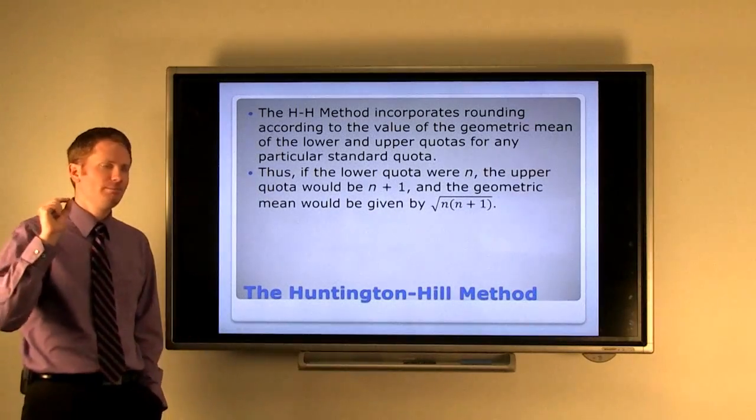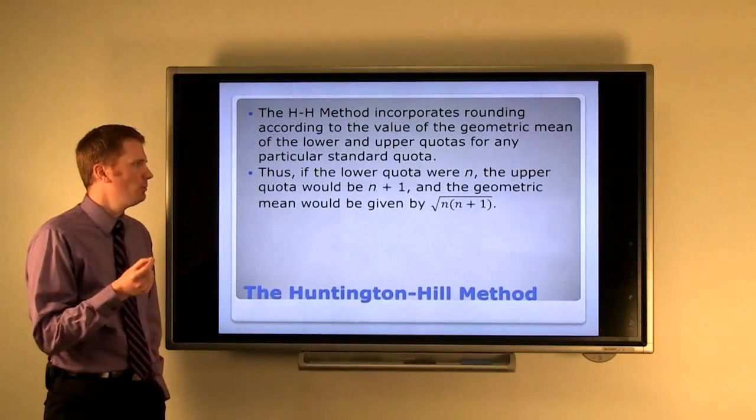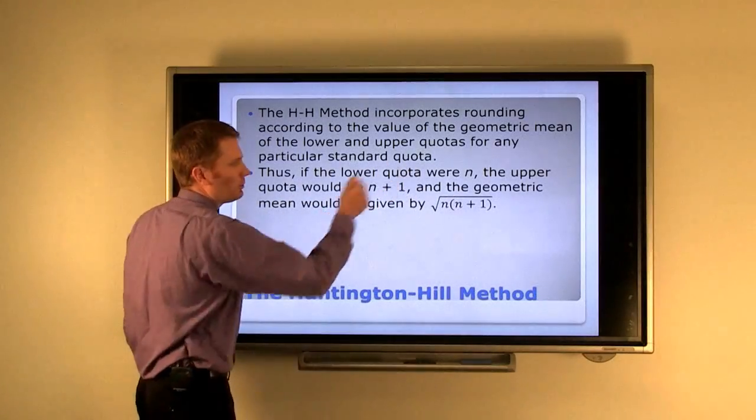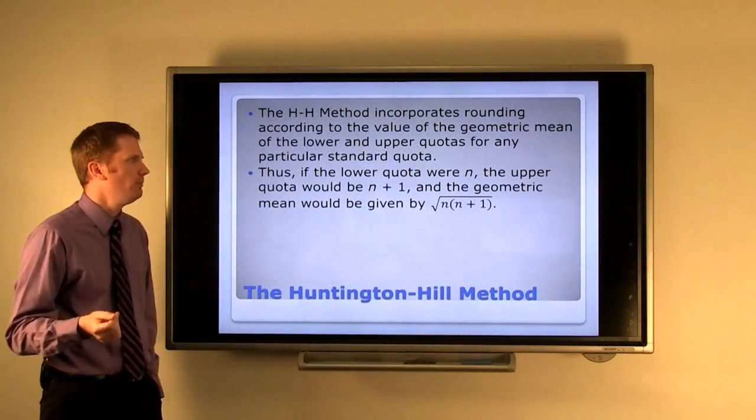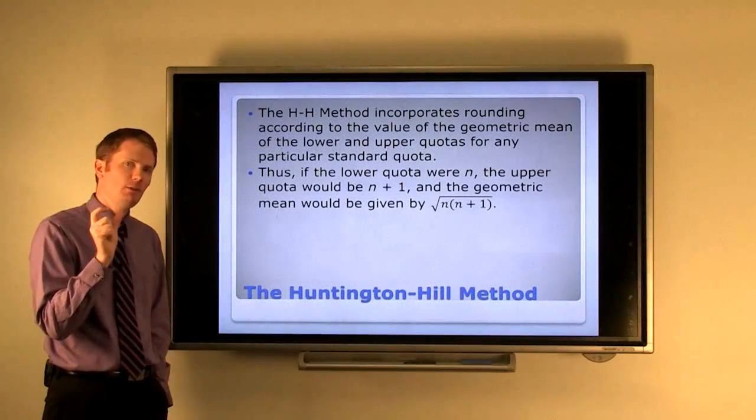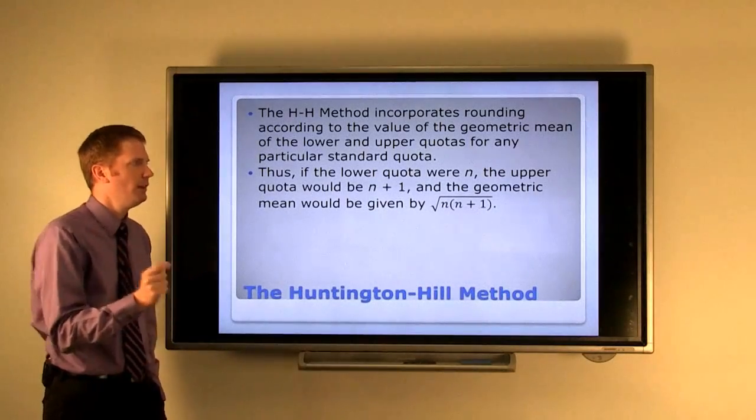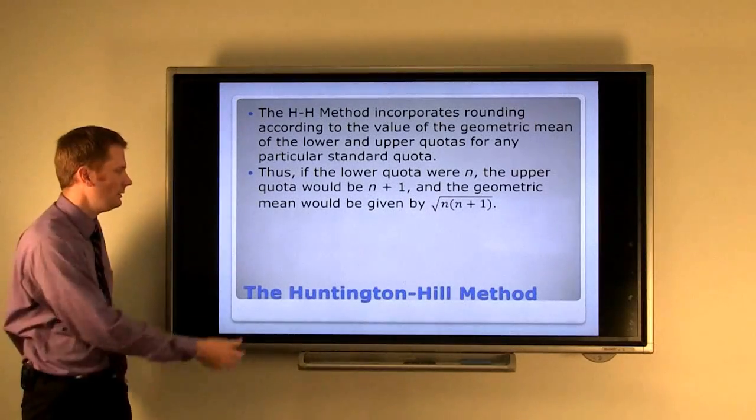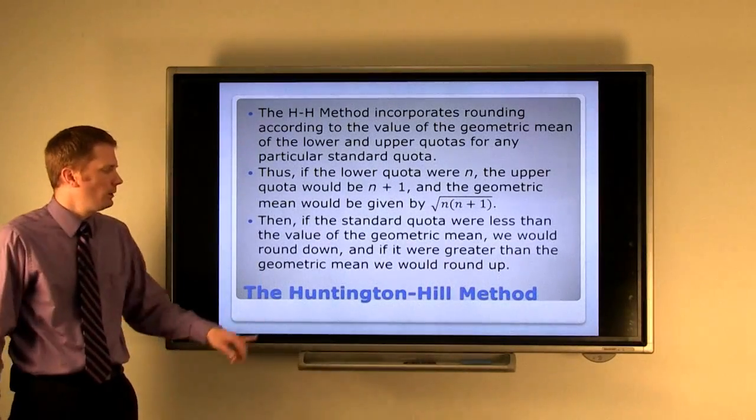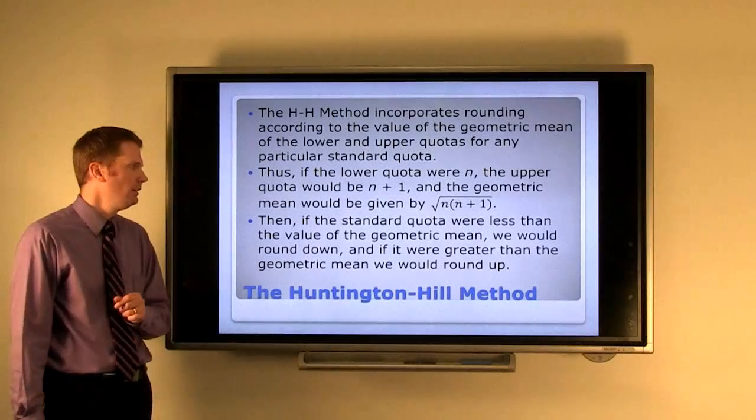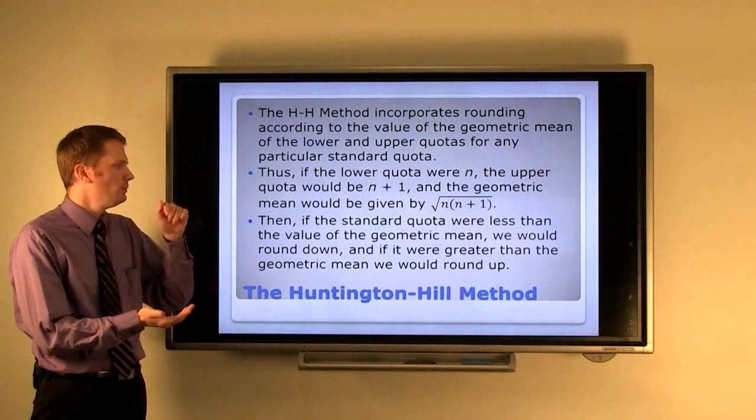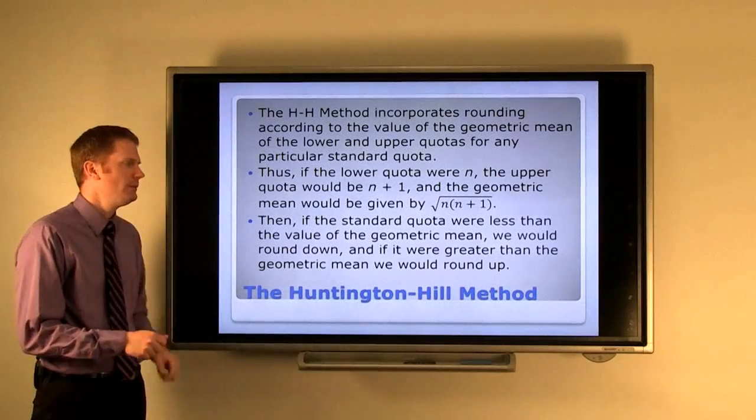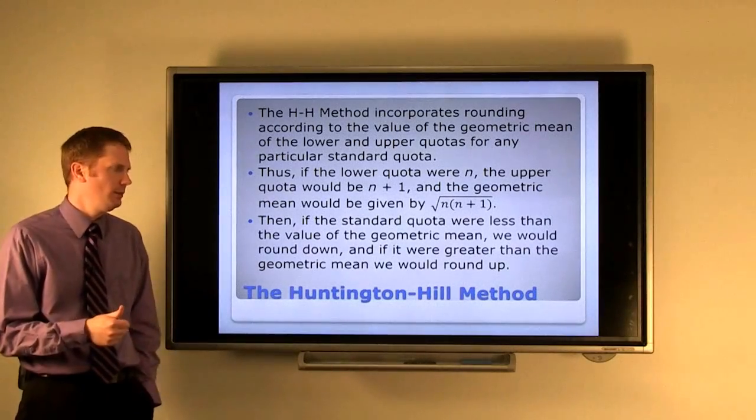First of all, if the lower quota were n, the upper quota would be n plus one. If the lower quota were two, the upper quota would be three. Then we find the geometric mean of those two numbers by multiplying them together, two times three, and then take the square root of that. What Huntington and Hill suggested is that if for any particular standard quota, if it were less than the value of the geometric mean, we round down. And if it's larger than the value of the geometric mean, we round up.